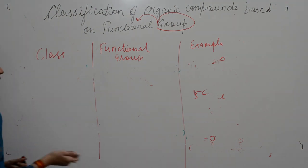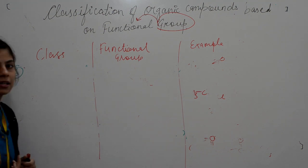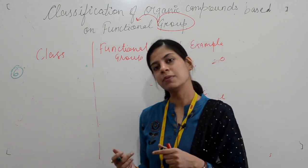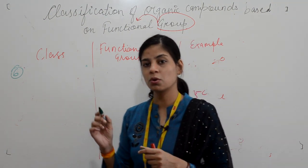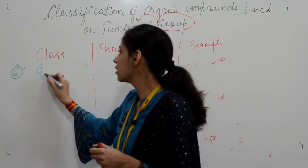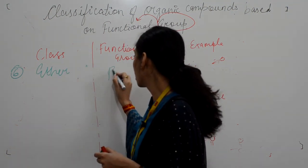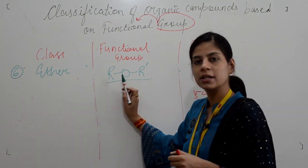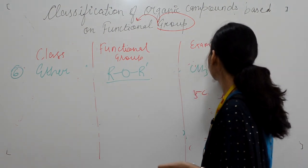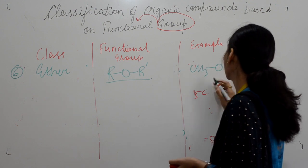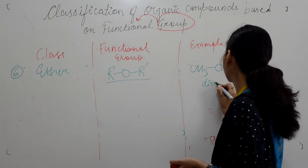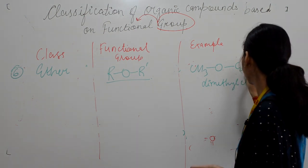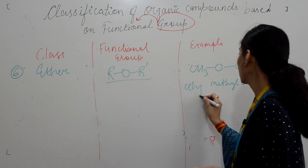Next is ether. There is always a confusion between ether and ester. Remember: esters are derivatives of carboxylic acid with the formula R-C(=O)-O-R'. Ethers are organic compounds in which the functional group is R-O-R', where oxygen is directly bonded to two same or different alkyl chains. Example: CH3OCH3 is dimethyl ether. If you take C2H5, the name will be ethyl methyl ether.